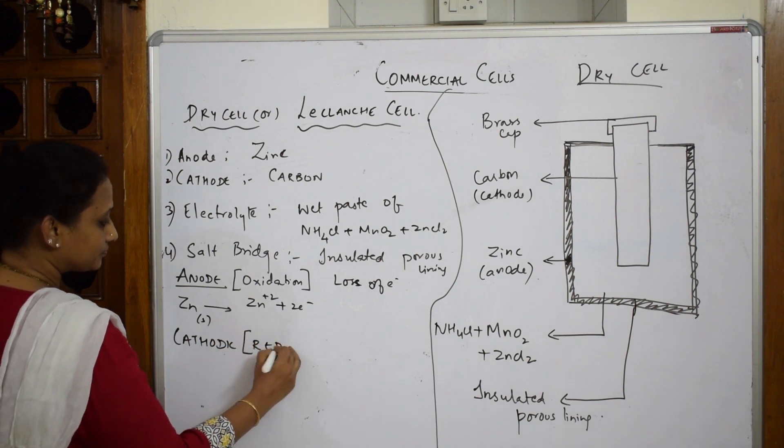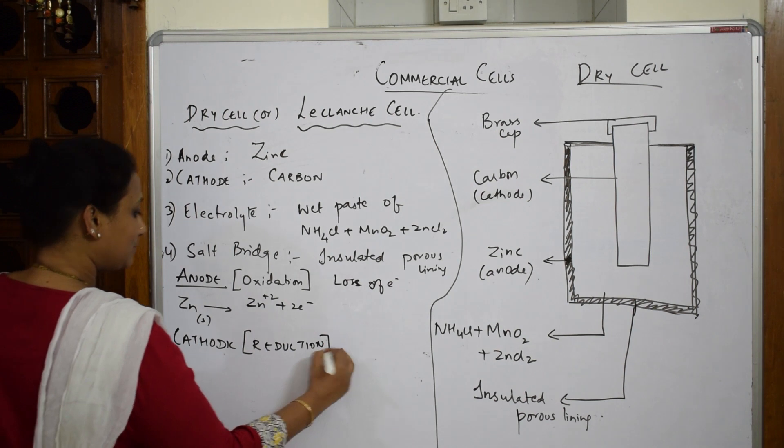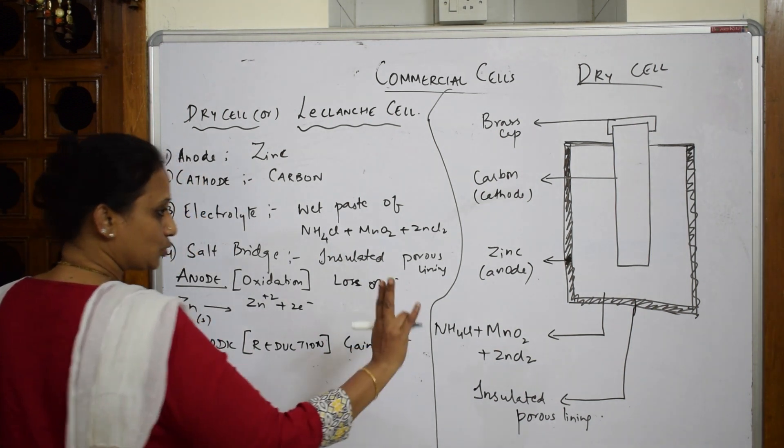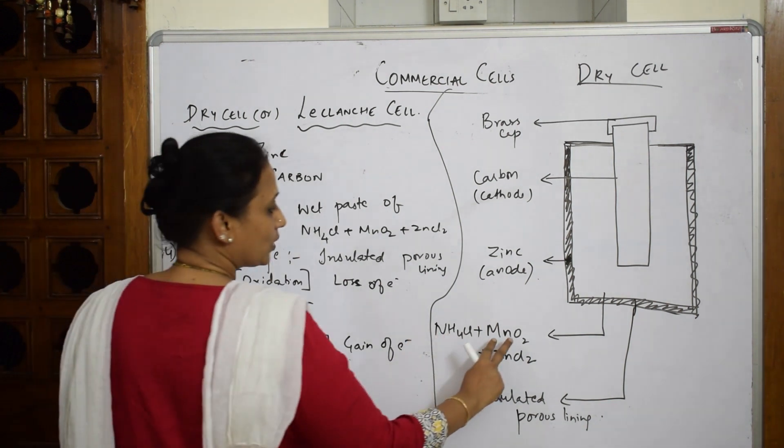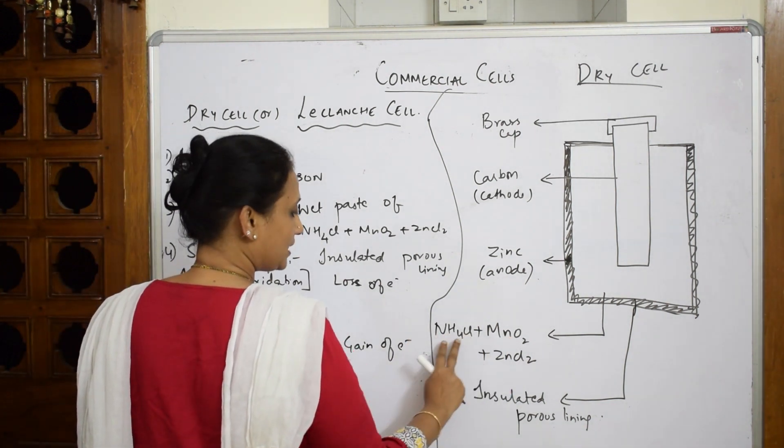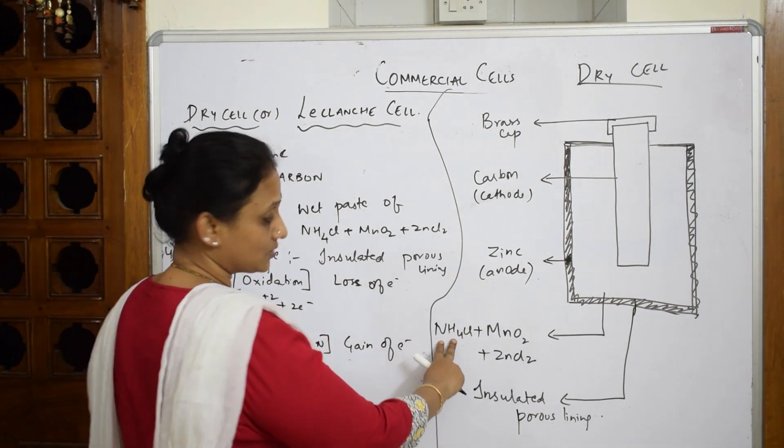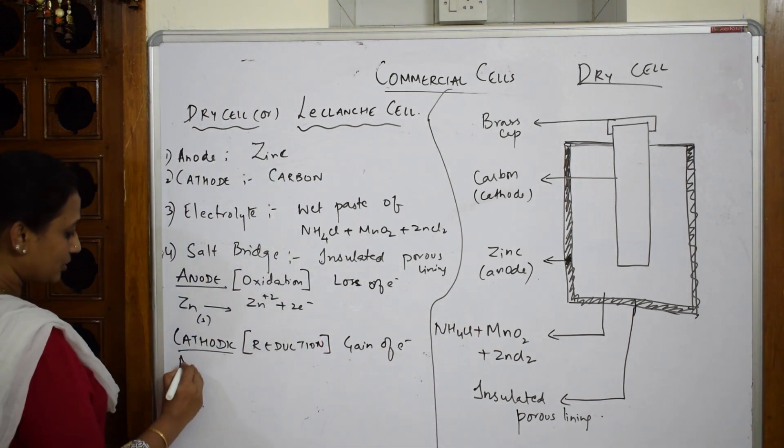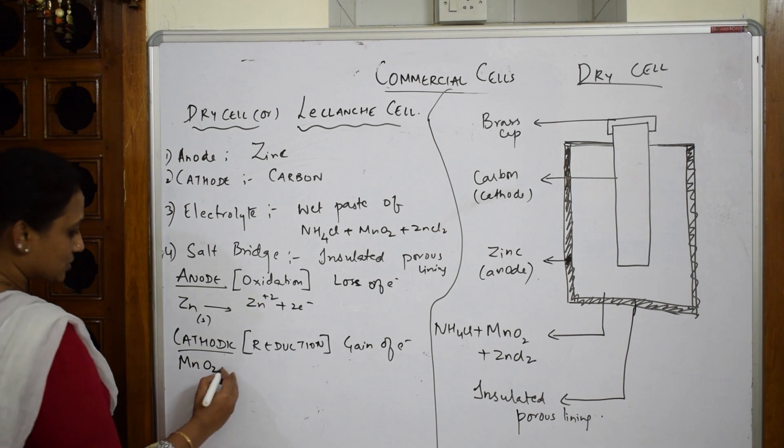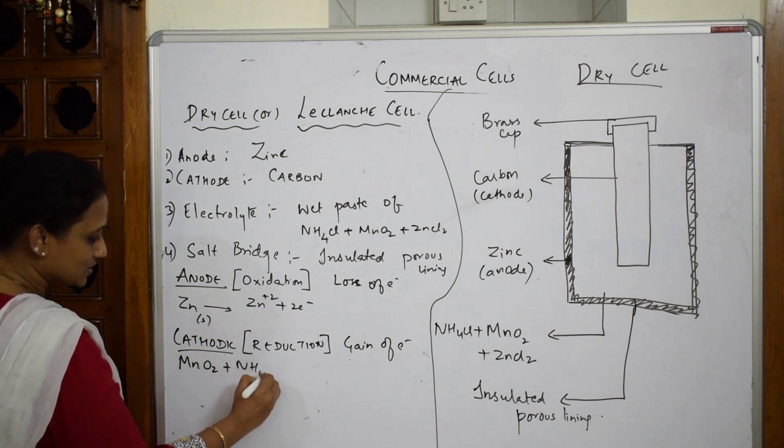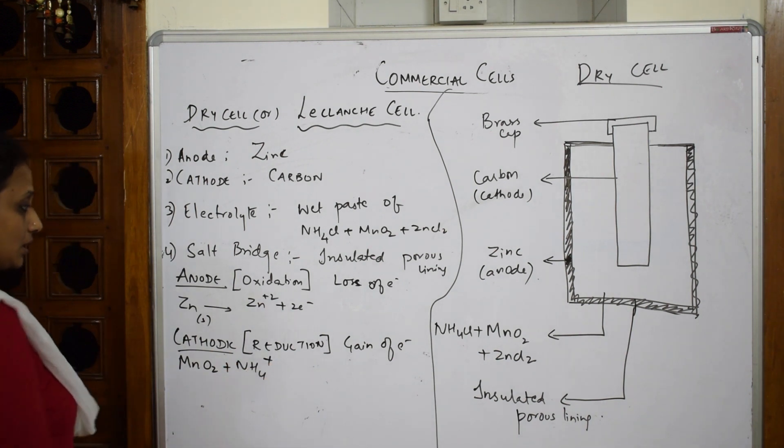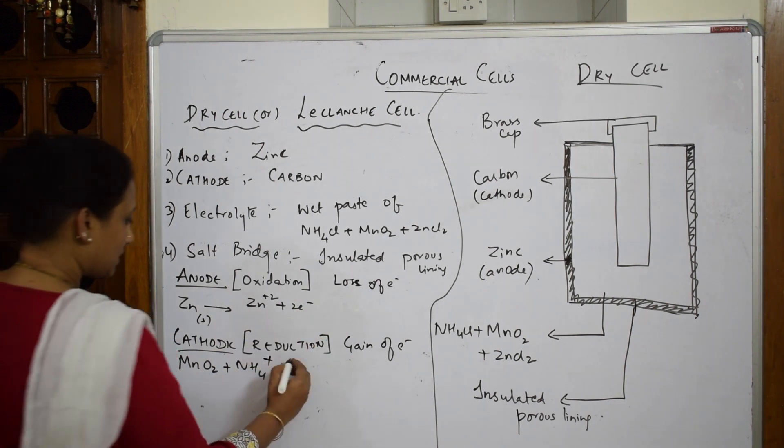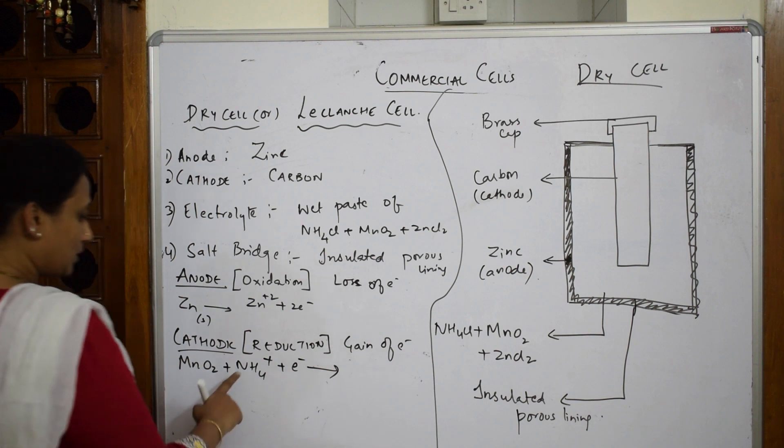Then what happens? This is your cathodic reaction. This is the reduction. In reduction what will happen? Gain of electrons will happen. Observe carefully, two things you have to take: one is MnO2 and NH4⁺. These two, the ionic form I'm picking up. You're going to take MnO2, manganese dioxide, plus NH4⁺. These are going to pick up this electron.